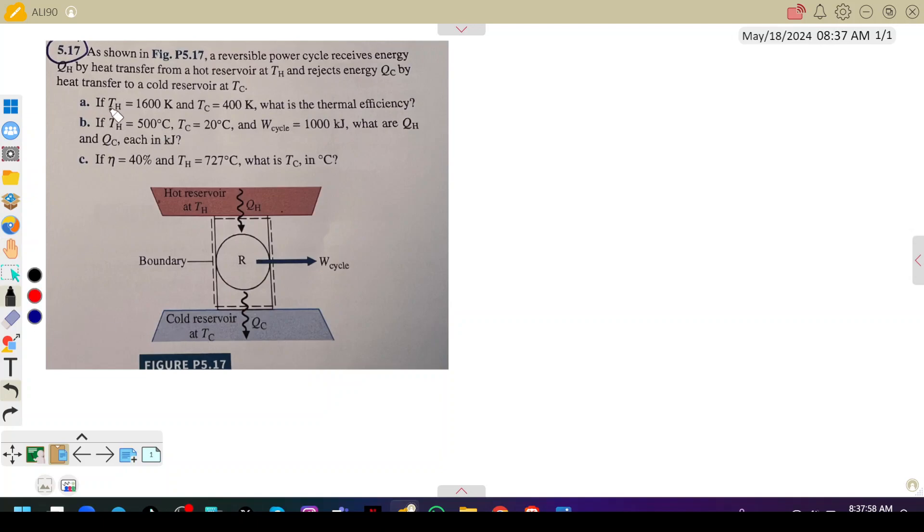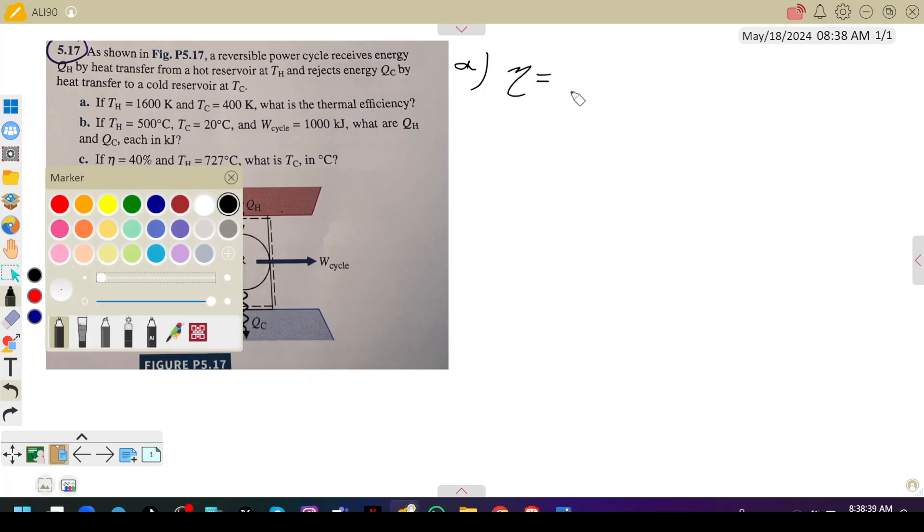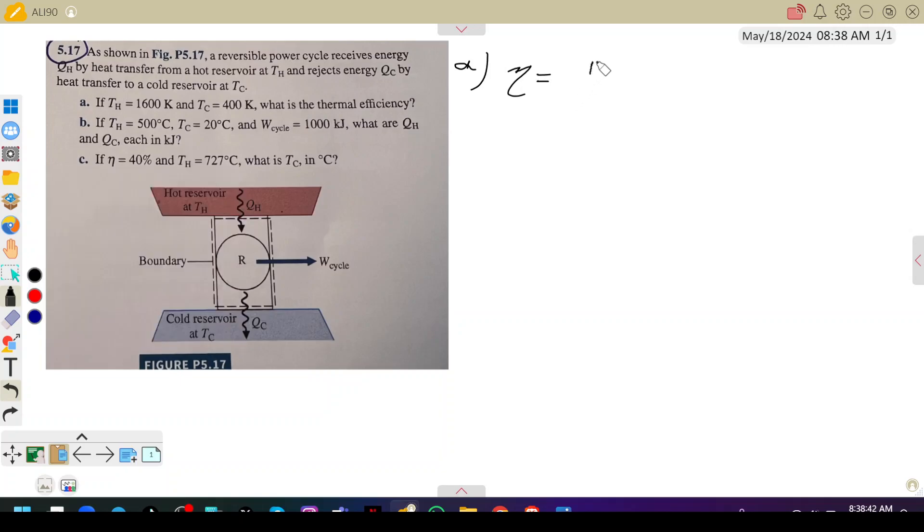For the first question, if Th is 1600 Kelvin and Tc is 400 Kelvin, what is the thermal efficiency? For part (a), we can see that efficiency would be equal to (Th - Tc) divided by Th, which makes it 1 minus Tc divided by Th. So replace each term with its value.